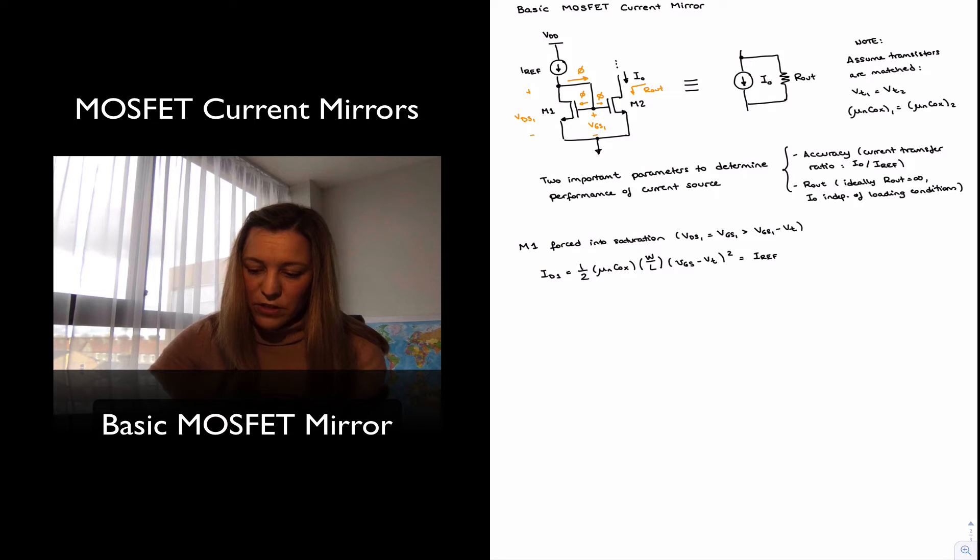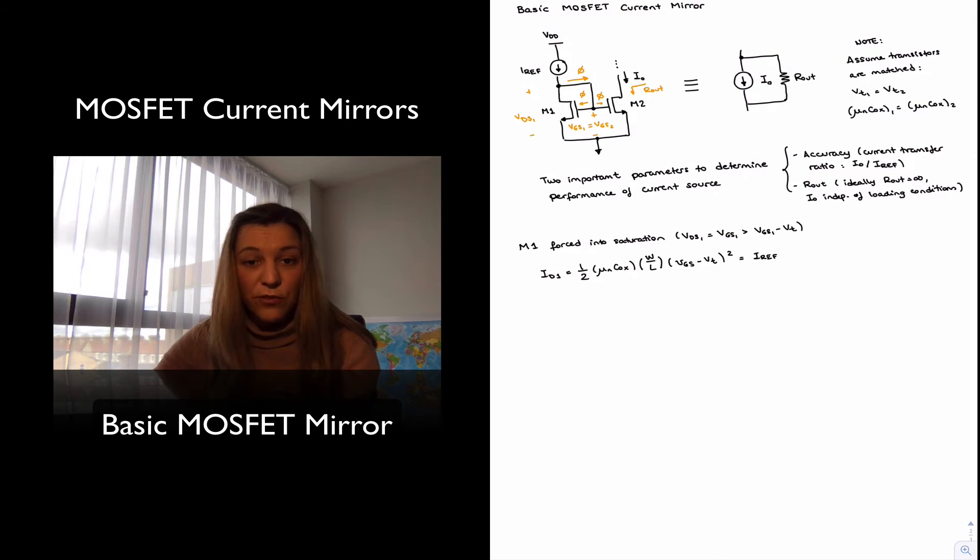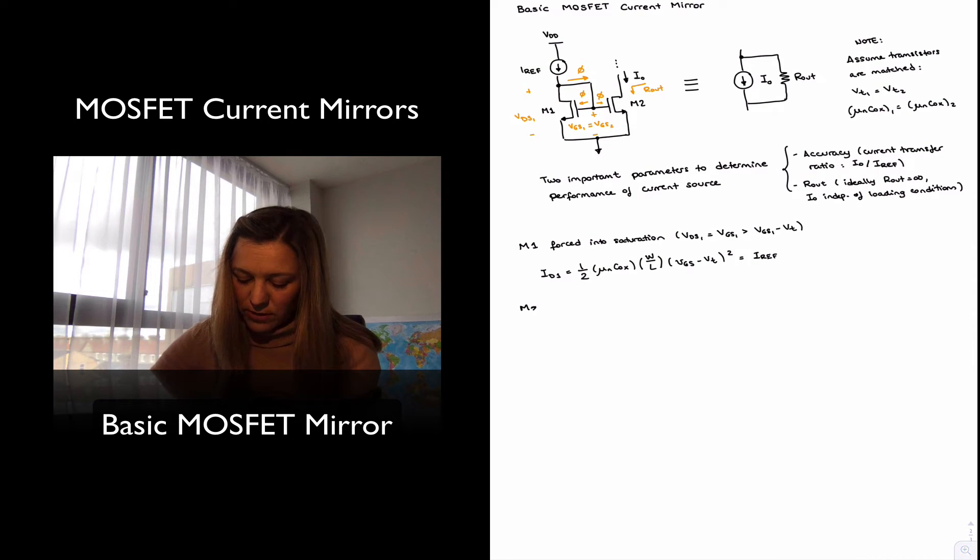Now, since my VGS are tied together, I mean, the sources and the gates of transistor M1 and transistor M2 are tied together, then I will have that VGS1 is equal to VGS2, or I can just refer to it as simply VGS. And that's why I've just written VGS in my ID one equation. So I'm going to write M2 has the same VGS as M1.